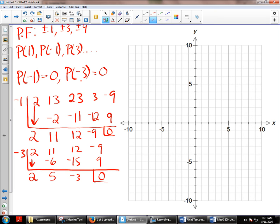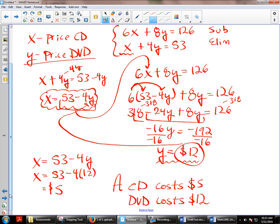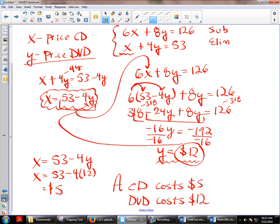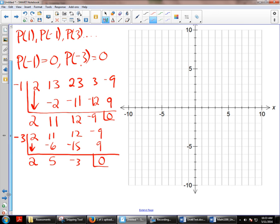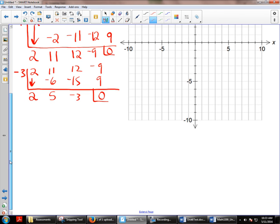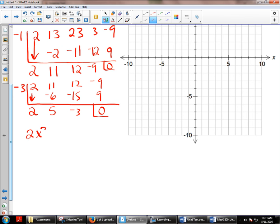So now what I end up with is a quadratic. Flashback to a previous video. So I end up with a quadratic. So I have 2x² + 5x - 3 = 0. So now I can go ahead and use quadratic formula to be able to find the remainder 2 zeros.